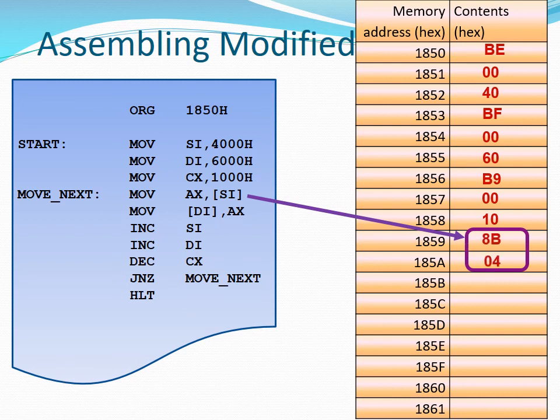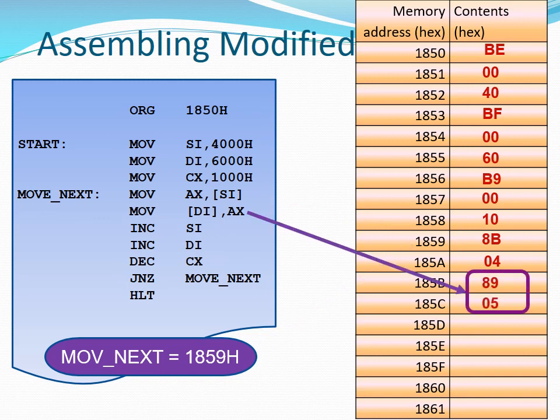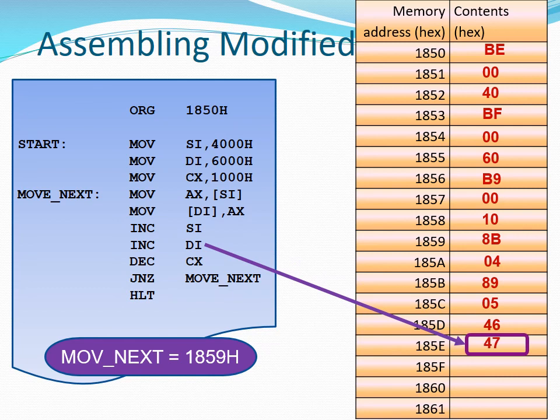The next instruction is a 2-byte instruction going into addresses 1859 and 185A. We notice that this instruction is labelled — the label is MOVE_NEXT — so we can automatically read the address value represented by the label MOVE_NEXT, which is 1859H. The next instruction is 2 bytes going into addresses 185B and 185C. The following instruction is a single byte going into 185D, then another single byte into 185E, and another single byte instruction into 185F.